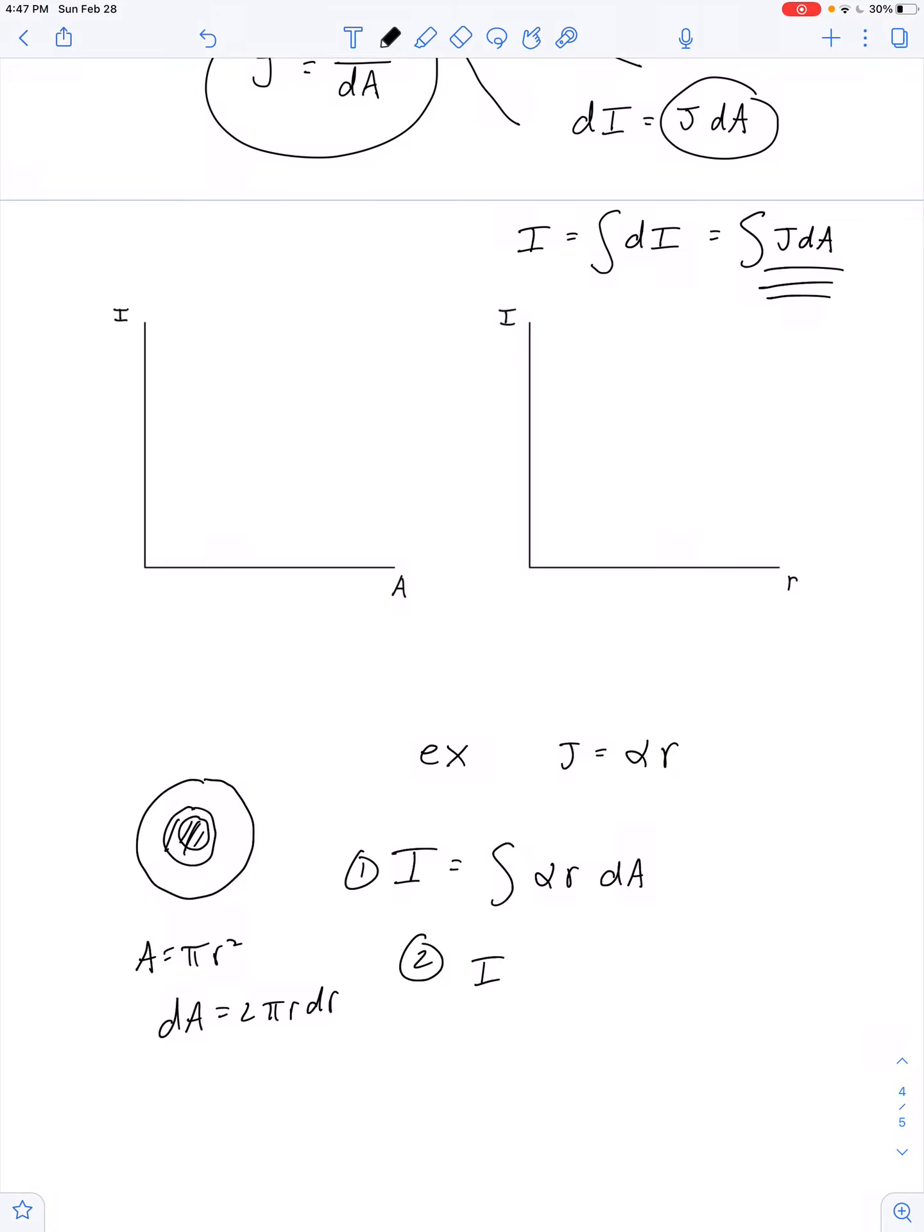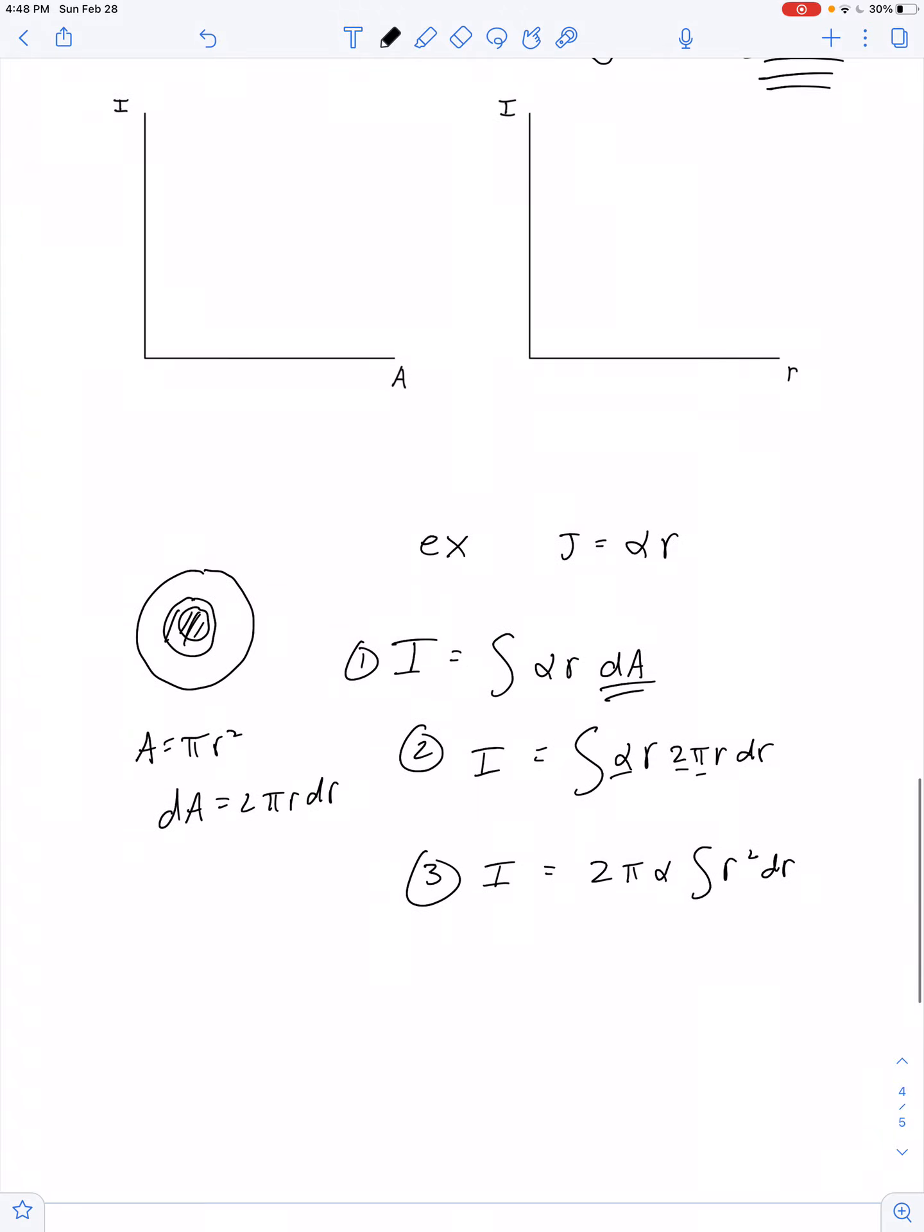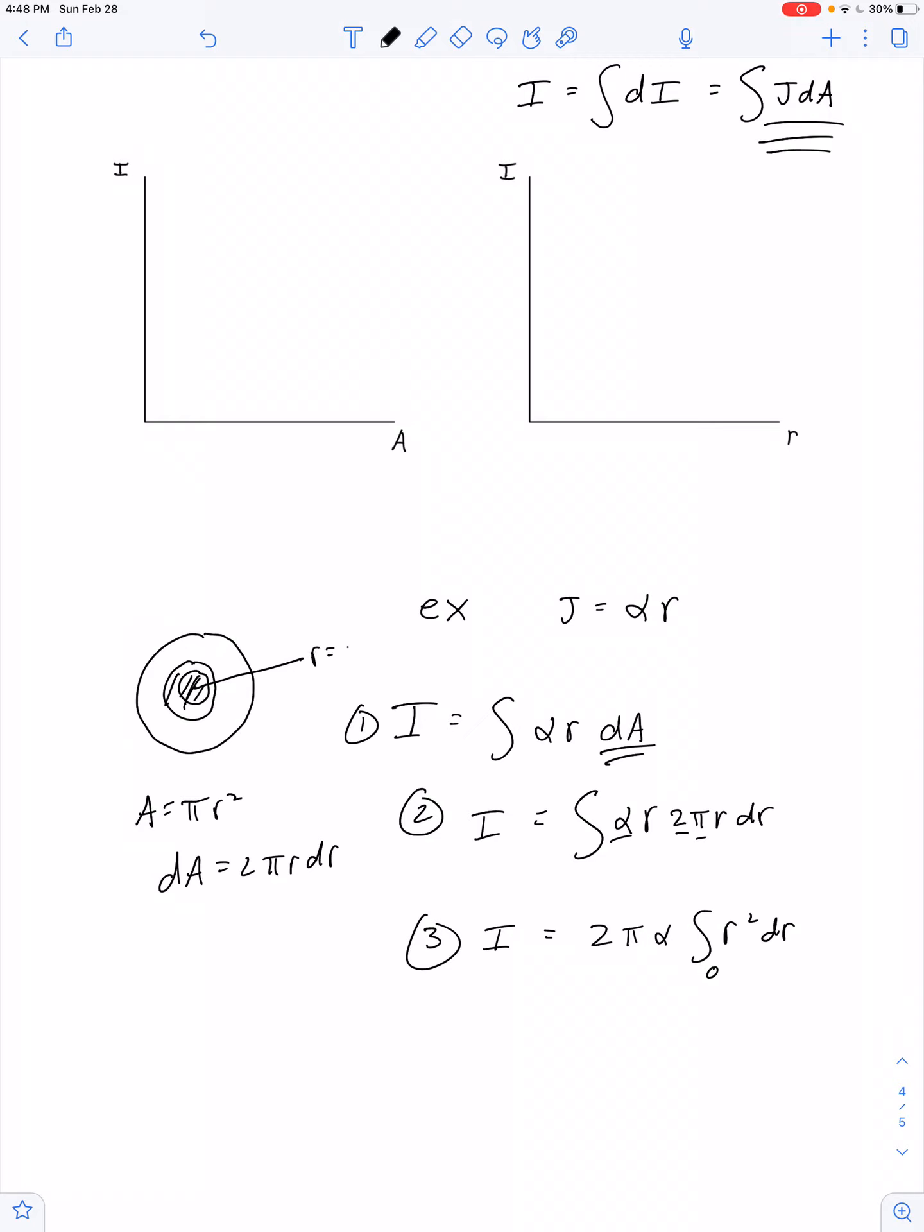So, the next step of our solution to finding the total current, we substitute for dA 2 pi R dr. Let's take all the constants out of the integral. So, 2 pi alpha times the integral of R squared dr. As we go from 0, from the center, to the edge, R equals capital R.